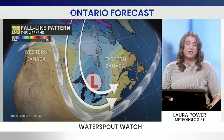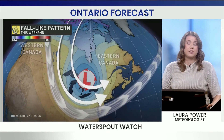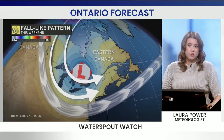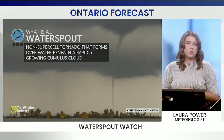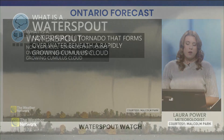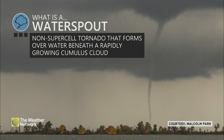We have an interesting pattern set up this weekend in Ontario with a very strong upper-level low descending over the Great Lakes, raising the threat for waterspouts. Now what exactly is a waterspout? Well, it is technically a tornado that forms over water, but it is from a non-supercell cloud, usually a cumulus cloud.